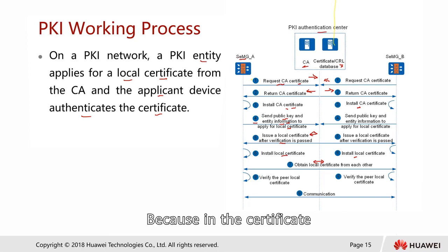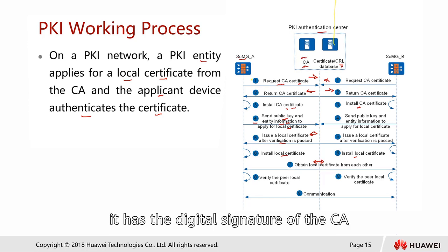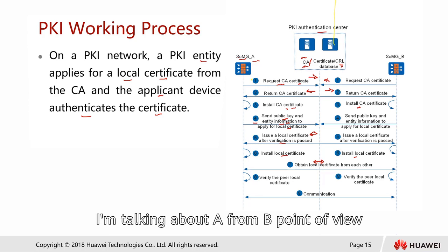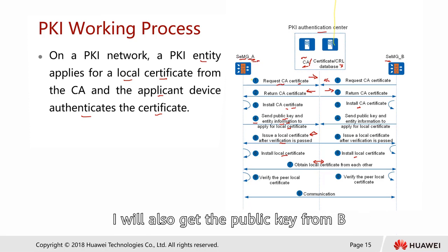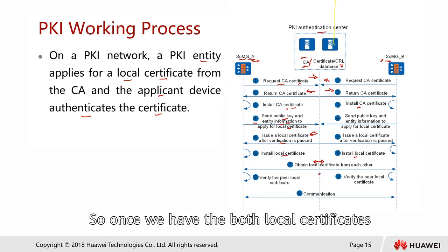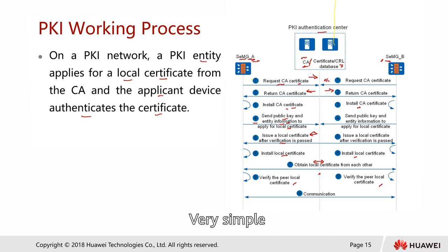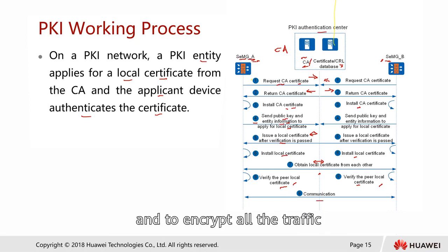Why do they need to share with each other? Because the certificate actually includes everything in detail — it has the fingerprint, it has the signature of the CA, it has the information about the public key. From firewall B's point of view, I'm getting the public key of firewall A. And from firewall A's point of view, I'm getting the public key from B. Once we have both local certificates, they will verify the peer local certificate. We have a CA, so I can verify through the CA to make sure that I'm actually getting the cert I intended to. After that, they can use the cert to encrypt all their traffic, and the other party will be able to decrypt and encrypt on the other side.